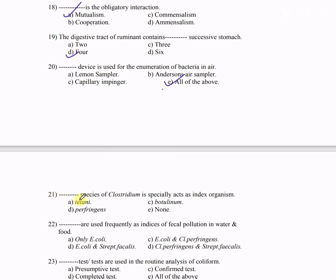Question 21: Dash species of Clostridium especially acts as index organism — A) tetani, B) botulinum, C) perfringens, D) none. The correct answer is C — perfringens. Clostridium perfringens acts as an indicator of faecal pollution because it is entirely faecal in origin.